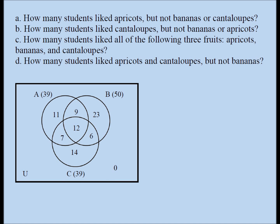Here are the questions with the completed Venn diagram. How many students liked apricots but not bananas or cantaloupes? That's how many liked only apricots, and the answer is 11. How many students liked cantaloupes but not bananas or apricots? The answer is 14. How many students liked all three fruits? That would be 12. How many students liked apricots and cantaloupes but not bananas? The answer to part D is 7.